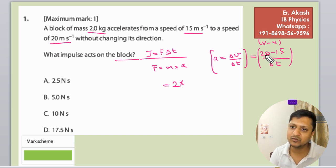So 20 minus 15 is 5 by delta t, so F is equal to 10 by delta t.